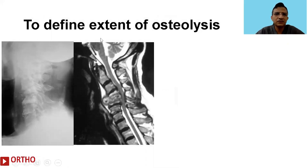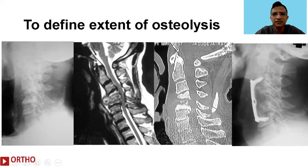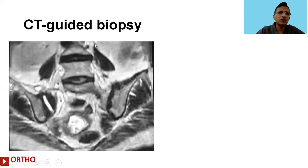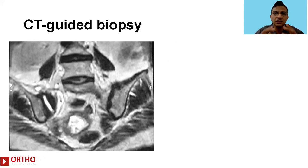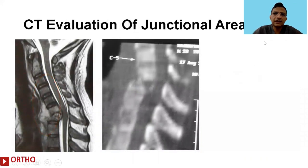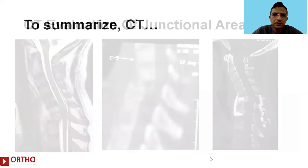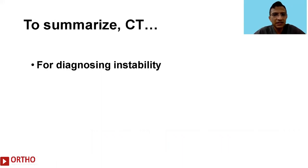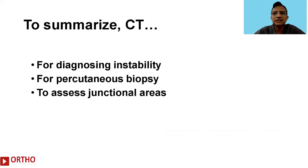CT allows us to define the extent of osteolysis. In a subaxial lesion, although MRI showed some involvement, CT clearly demonstrated a large anterior defect requiring surgical intervention. CT-guided biopsy is also a useful modality in spinal infection investigation — here is a case with hyperintensity in the SI joint taken for CT-guided biopsy with appropriate treatment carried out. CT is also useful for evaluating junctional areas; here is a cervical-thoracic tuberculosis patient operated with anterior plus posterior fixation. In summary, CT is useful for diagnosing instability, percutaneous biopsy, and assessing junctional areas.